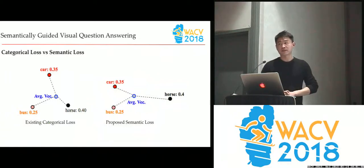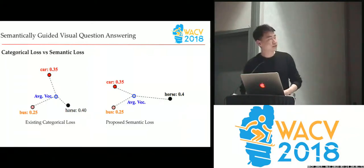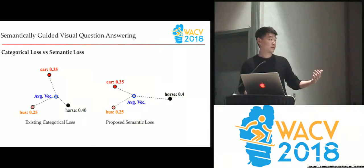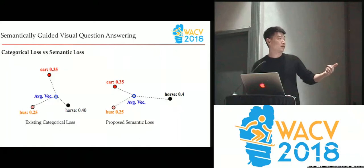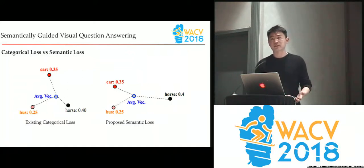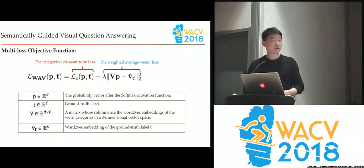The second contribution is that most people formulate the VQA problem as a classification problem. It's okay but not perfect. Say it's a three-class problem and the ground truth is 'bus.' If one system predicts 'car' and another predicts 'horse,' obviously 'car' is closer to 'bus' than 'horse' is. This semantic relatedness is not considered in cross-entropy loss. So we balance two terms: the classification loss and a semantic loss, adding a term called weighted average factor loss with a balance parameter.